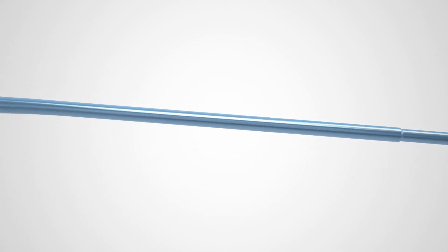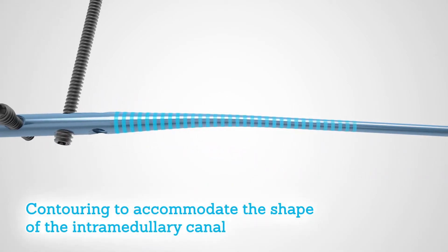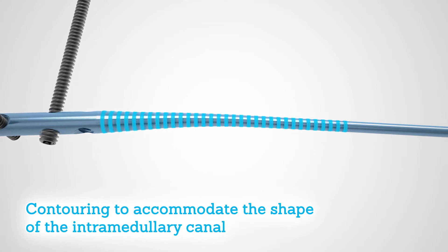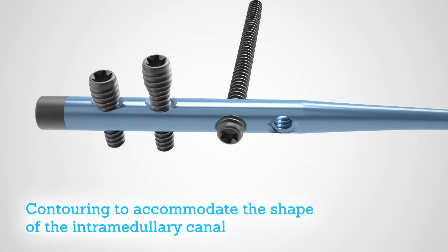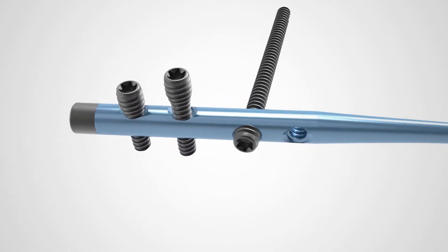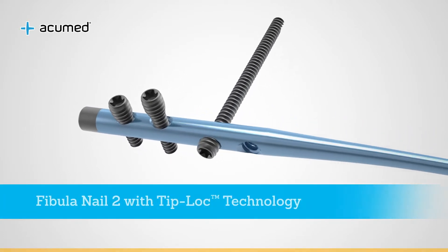The Fibula Nail 2 features contouring to accommodate the shape of the intramedullary canal and targeted interlocking screws to aid in the fixation of common fractures of the distal fibula.